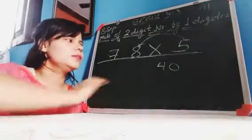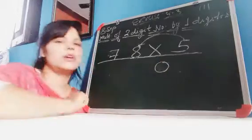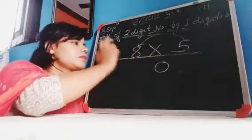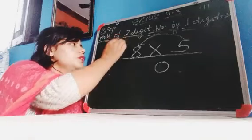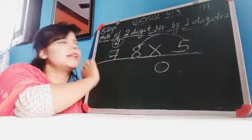We only write here 0 of 40, and this 4, we write in the next number, we write in the next number.